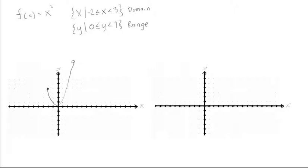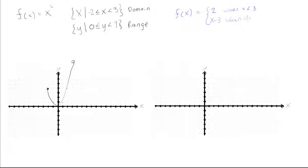Let's do one more example of something that looks quite a bit different. Let's do f(x) equal to two different things: f(x) = 2 when x is smaller than 3, and f(x) = x minus 3 when x is greater than 3.